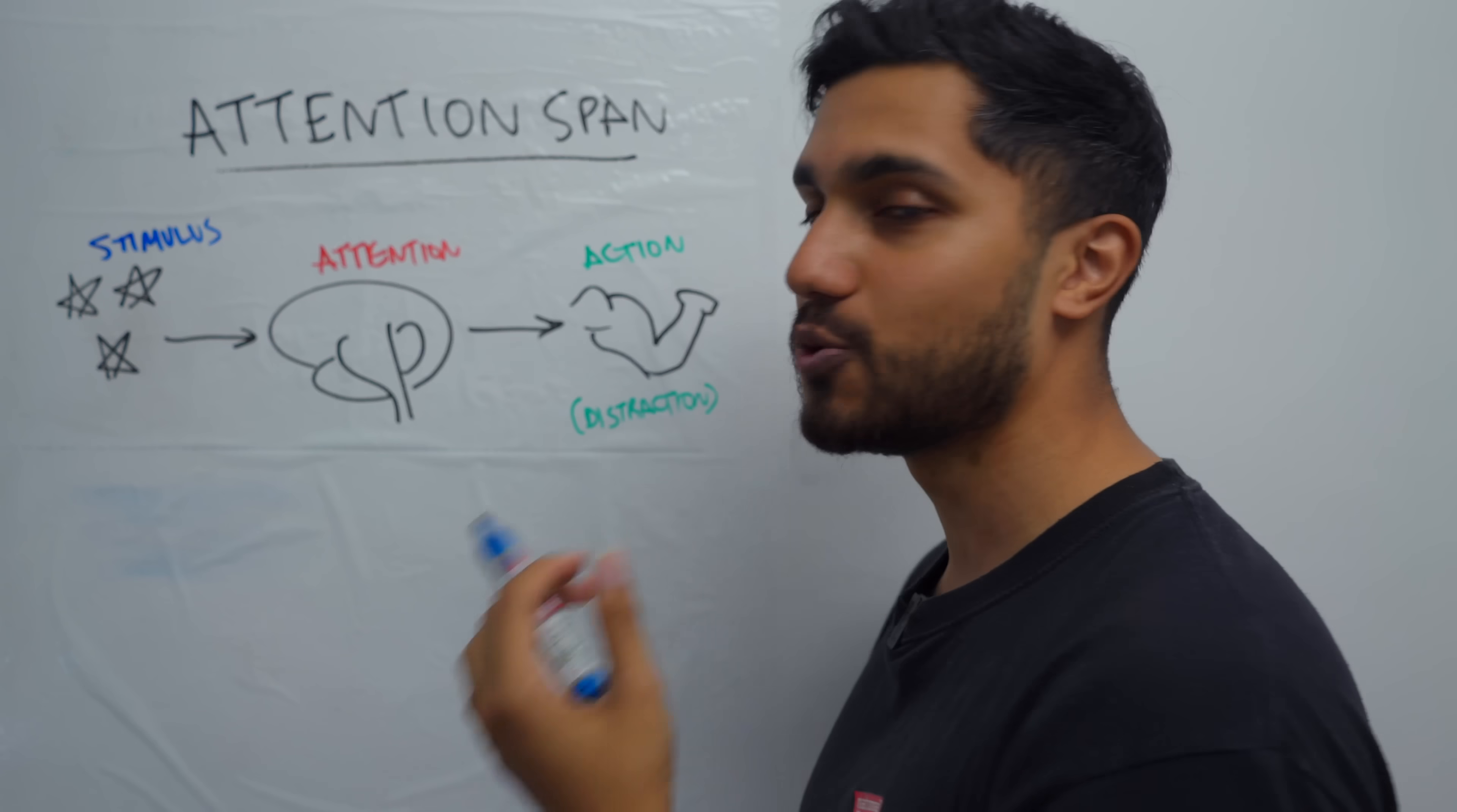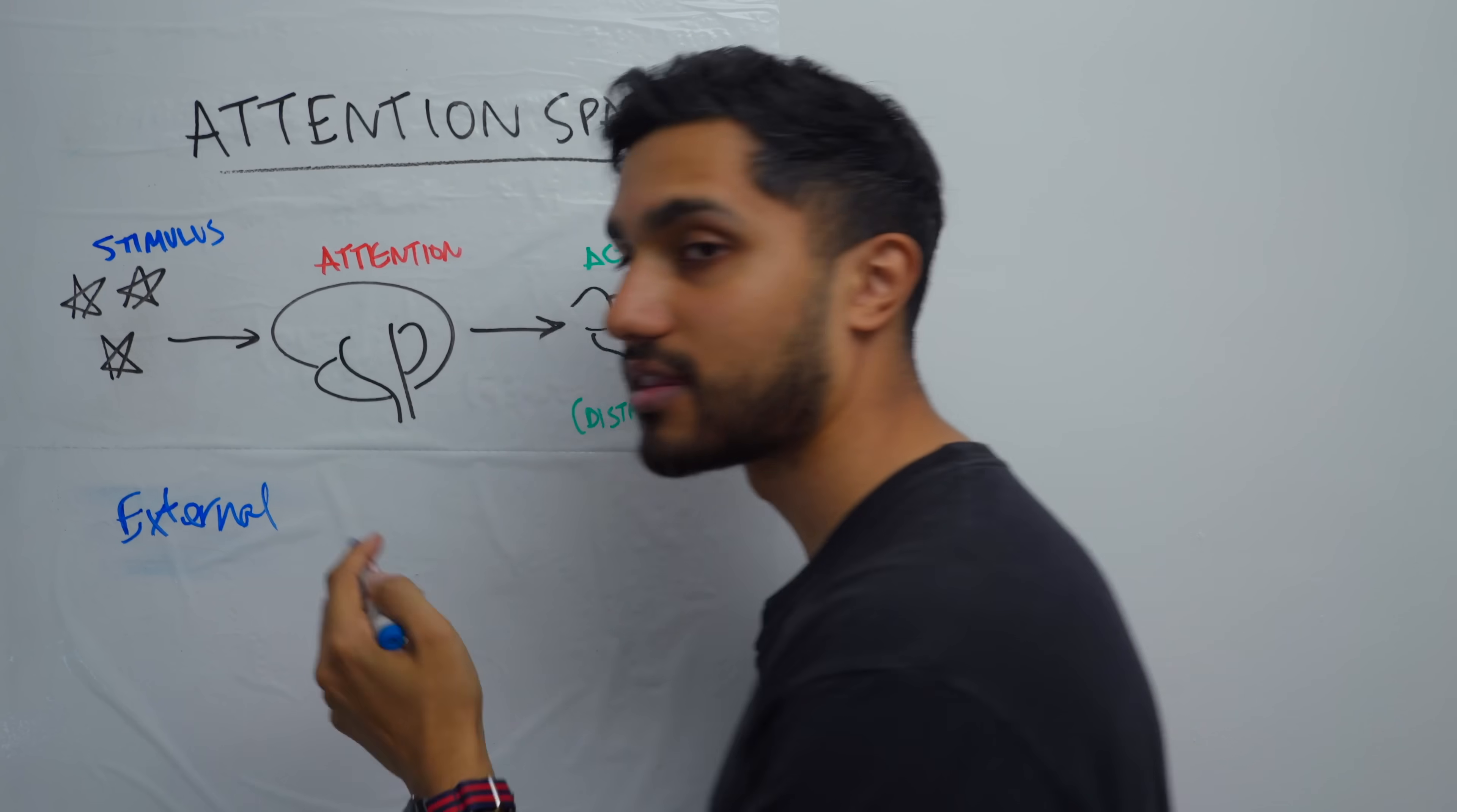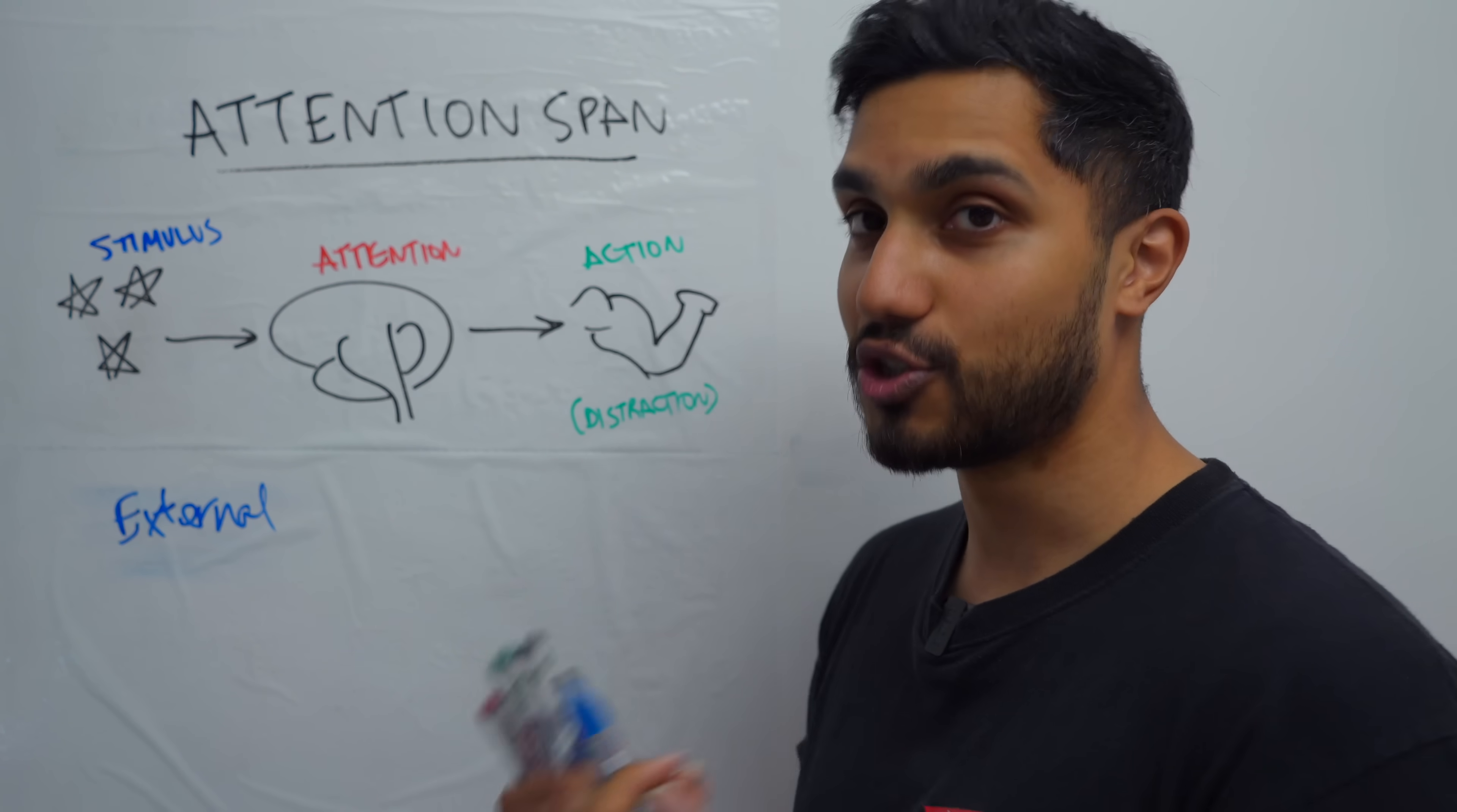And now this is where humans differ from animals. We all understand external triggers, external stimuli in the environment, things that you hear or you see or you touch that take your attention away. Dogs do that. Cats do that. Any other animal does that. And humans, we do that.